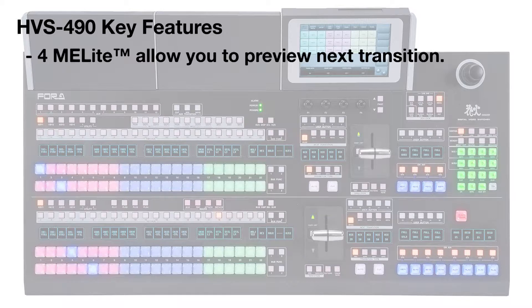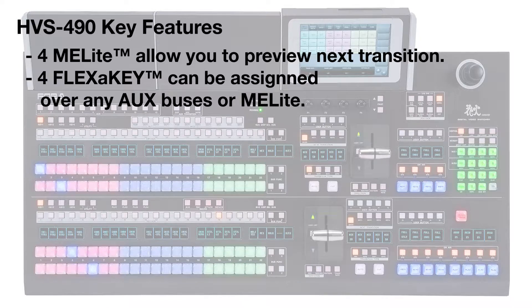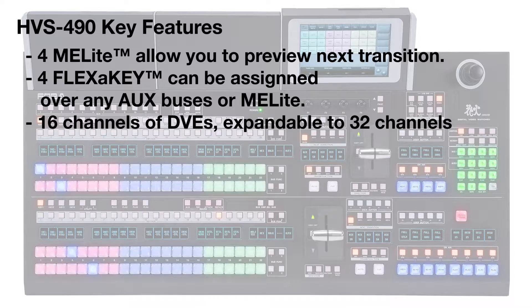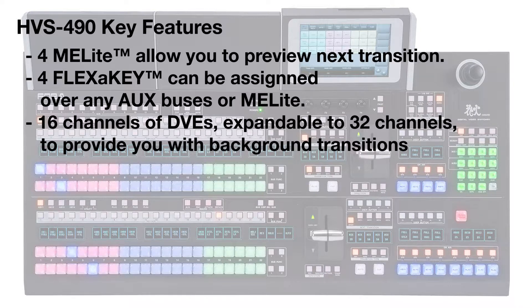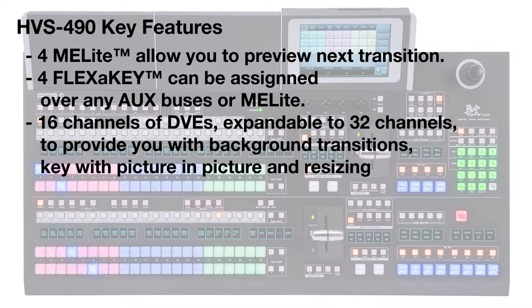Thank you for watching our introduction of the new HVS 490 video switcher from 4A. It has four ME lights that allow you to preview your next transition. It has four flexi-keys that can be assigned over any auxiliary bus or to an ME light. It has 16 channels of DVE, expandable to 32, to provide you with background transitions plus key, picture-in-picture, and resizing.